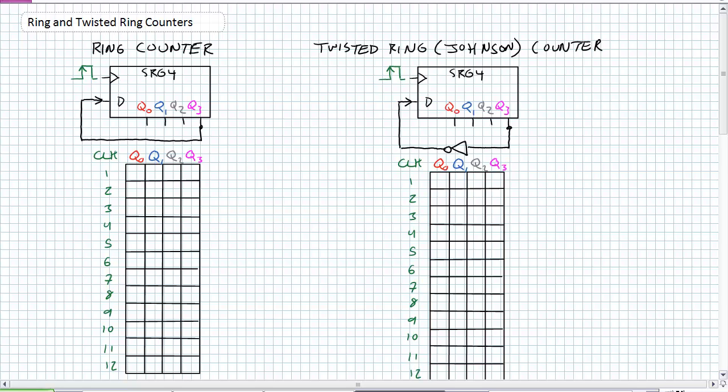A common point of confusion between people studying shift registers for the first time and counters for the first time is confusing the functionality between them. Counters count, shift registers shift. The basis of a counter is it advances to a recognizable sequence. So, triple zero one, double zero one zero, double zero one one. I'm counting from one to two to three. It's a recognizable sequence.